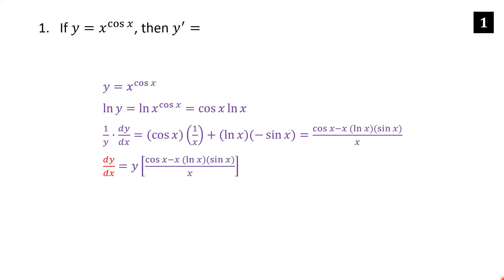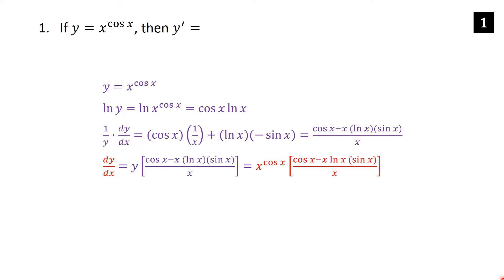Now I'm just going to multiply each side of the equation by y to bring y to the other side so we can get dy/dx by itself. Then I'm going to replace y by what it equals in terms of x, so we get x to the cosine x times the quantity cosine x minus x ln x sine x, all over x.